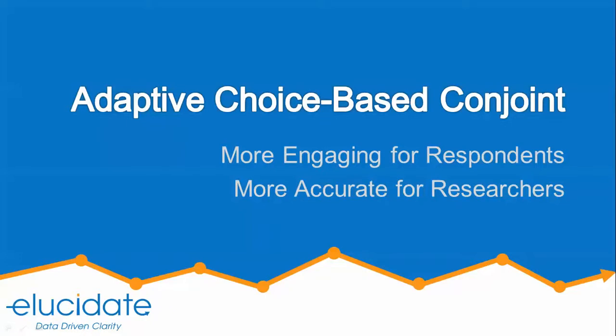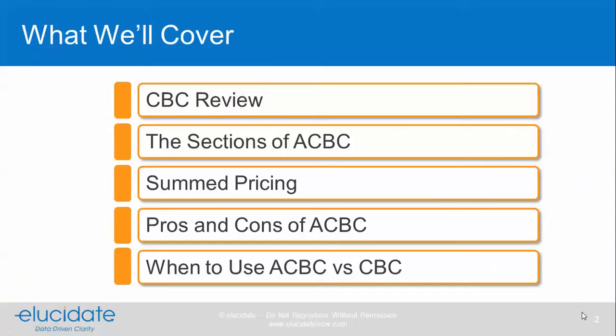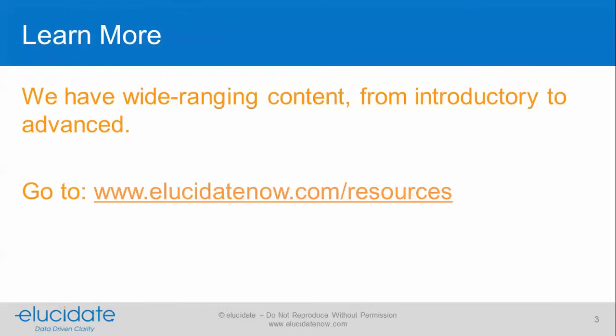This presentation covers adaptive choice-based conjoint, which is more engaging for respondents and more accurate for researchers. We'll start with a review of choice-based conjoint, CBC, then talk about the sections of ACBC. We'll also talk about summed pricing, the pros and cons of ACBC, and when to use ACBC over CBC. We have a lot more content on our website, elucidatenow.com.